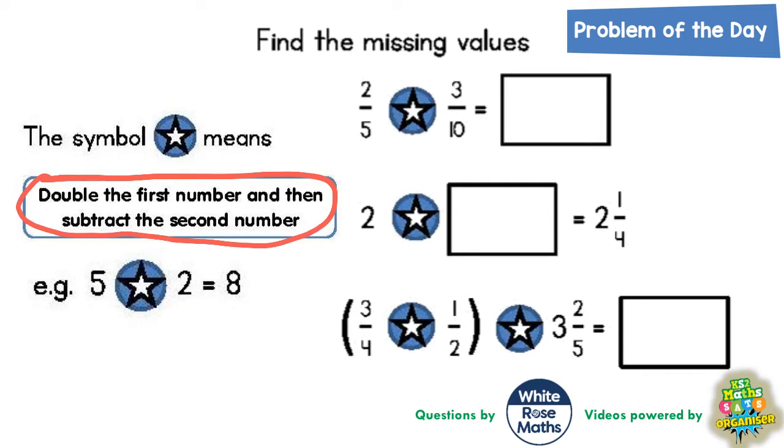So if we double the first number, 5 times 2 would be 10, and then subtract the second number which is 2, so subtract 2. So 5 times 2 is 10 and 10 subtract 2 is 8. That's how it works. The star means times 2 then subtract the second number.